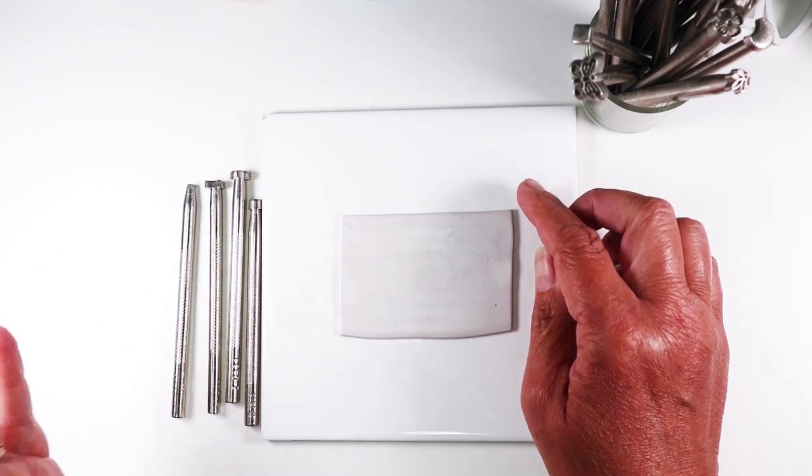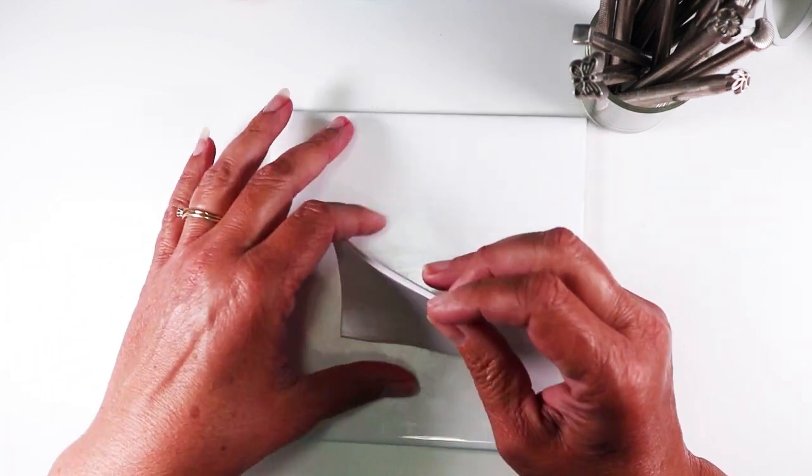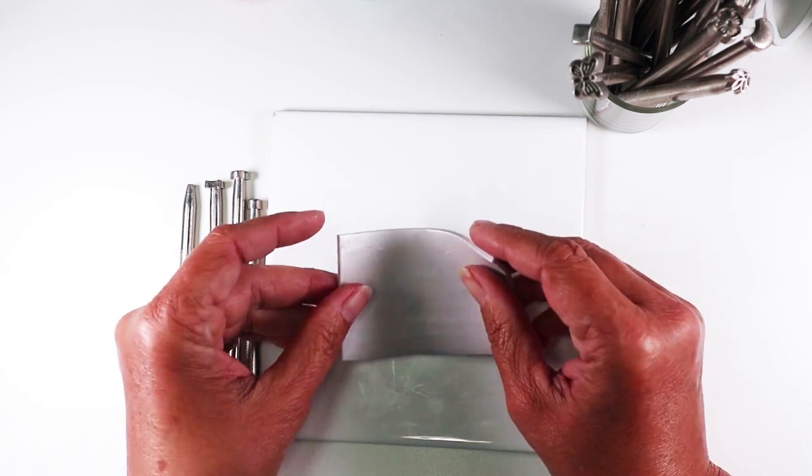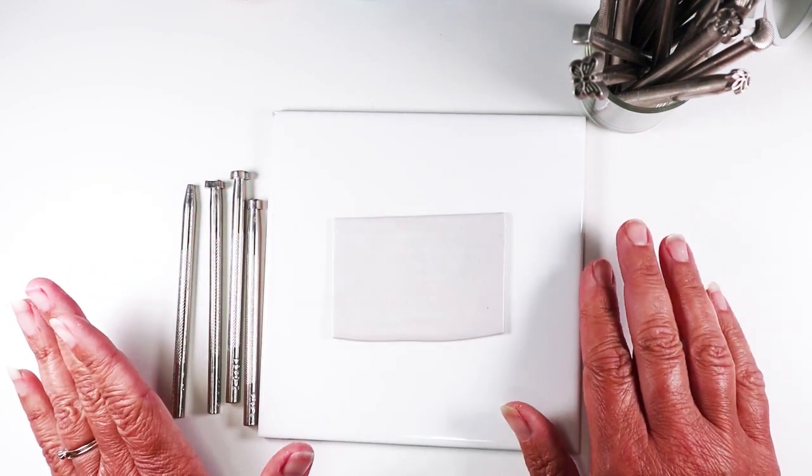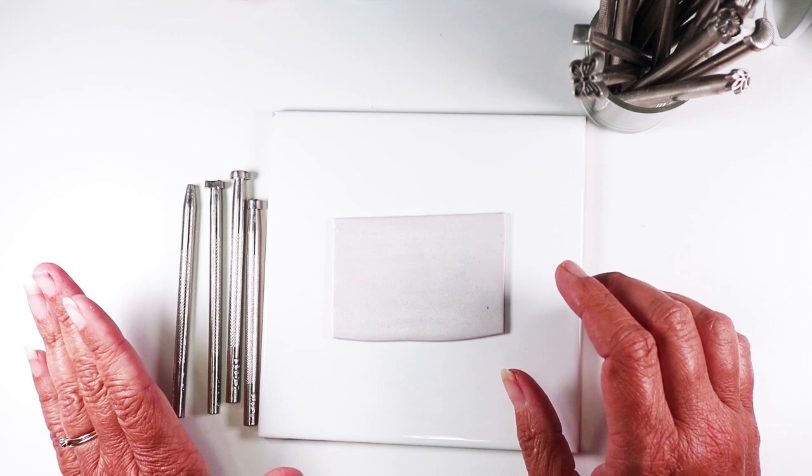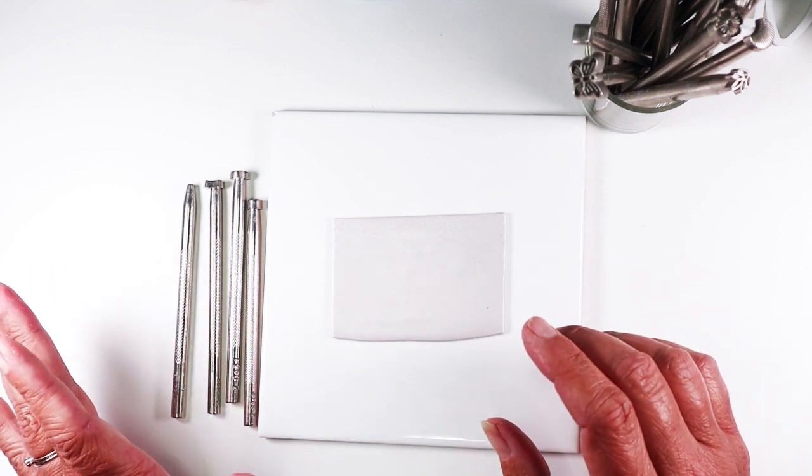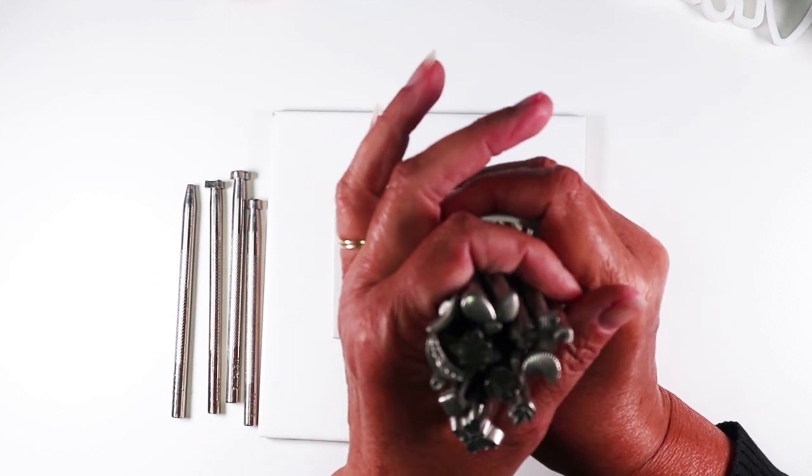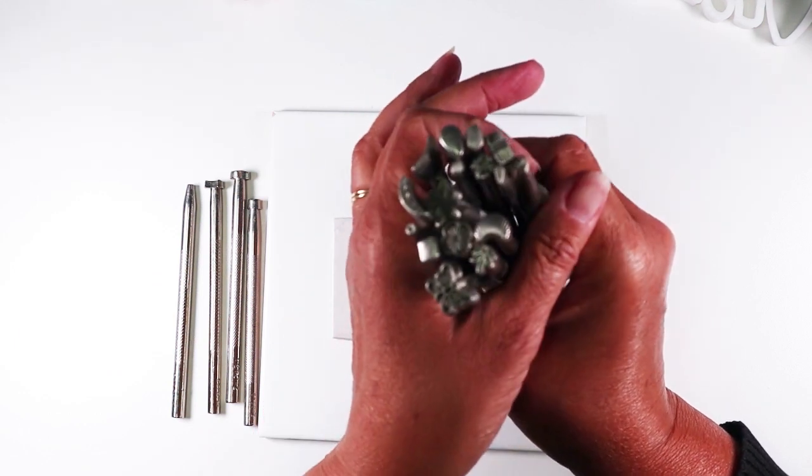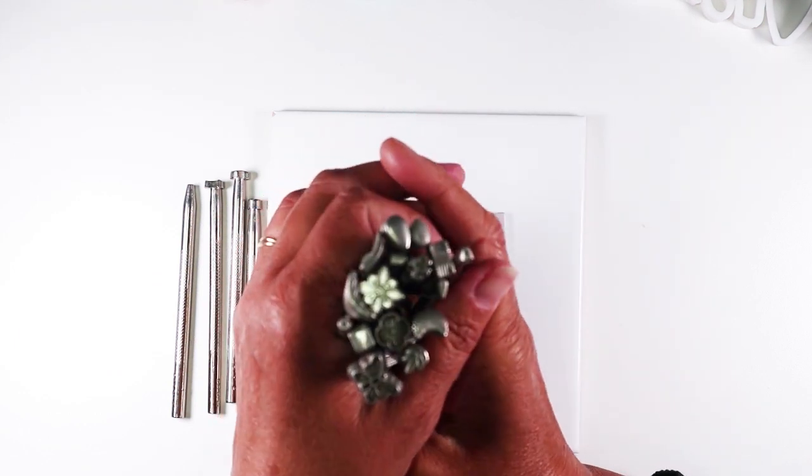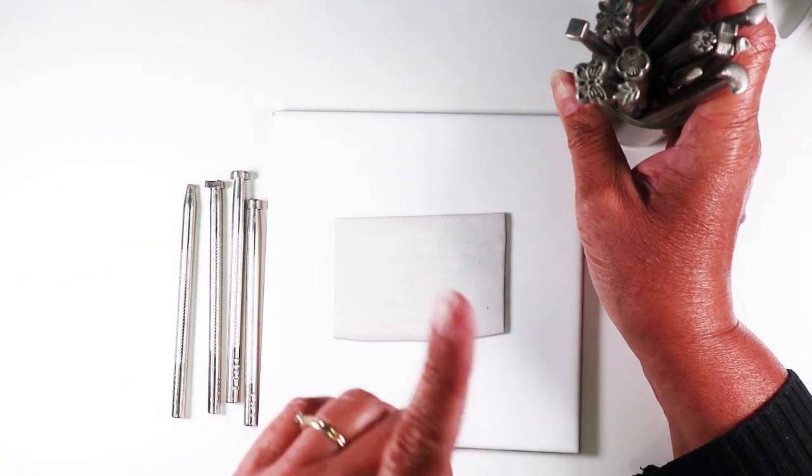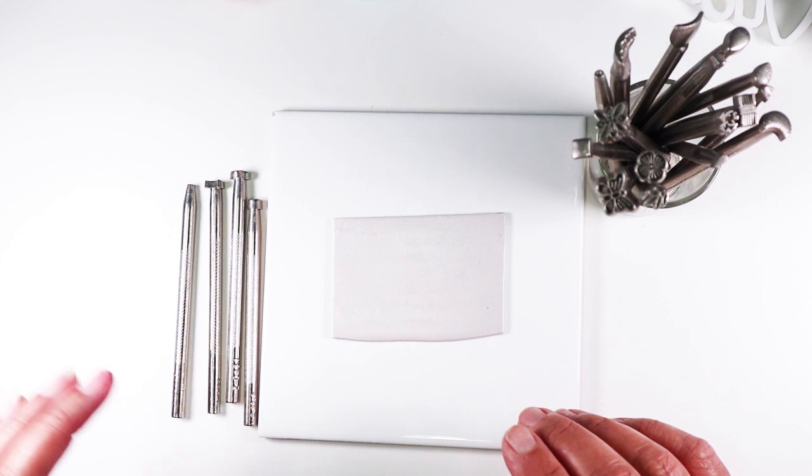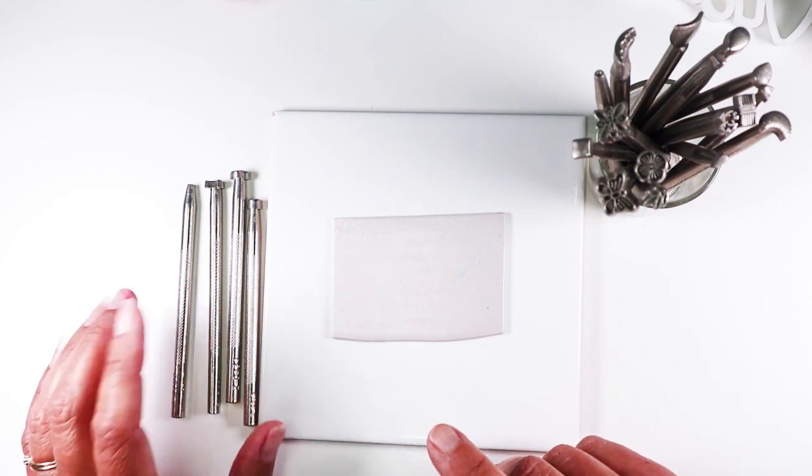We're starting with polymer clay rolled out on the thickest setting of my pasta machine, about 2.5mm thick, but feel free to experiment with different thicknesses. The tool set I have here is a leather stamping tool set and I really love these for polymer clay. If you don't have these, they're not very expensive, but I'll show you some alternatives in a minute.